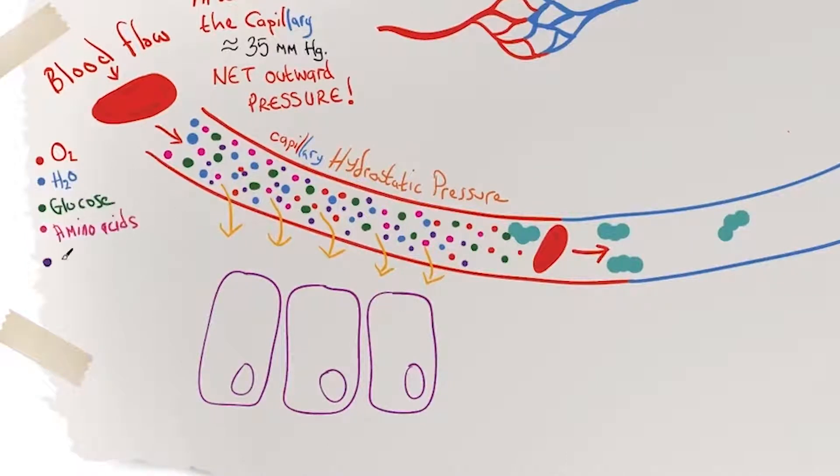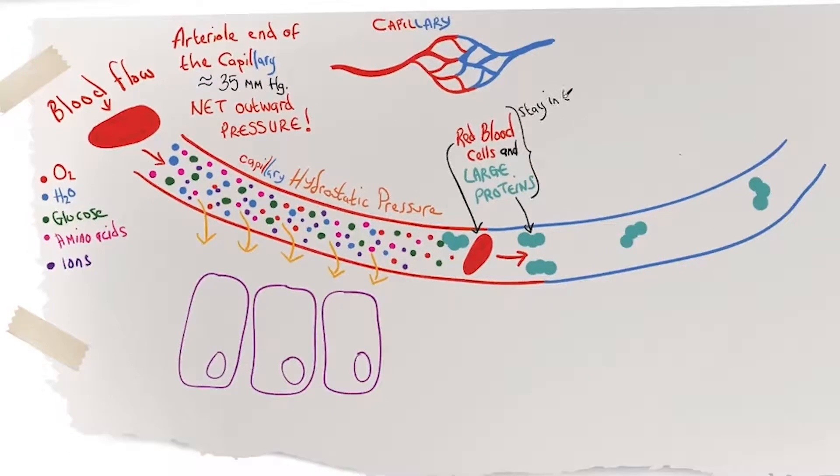glucose, amino acids, ions. However red blood cells and larger proteins stay in the capillary. They are too big to be forced through the thin walls.